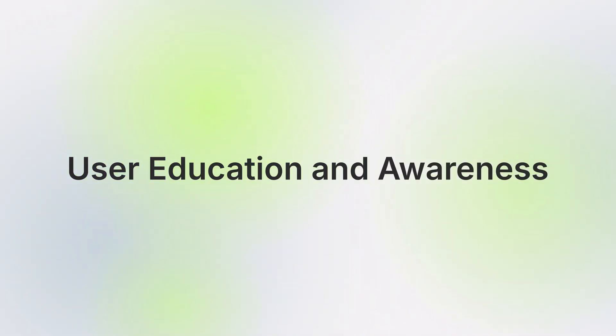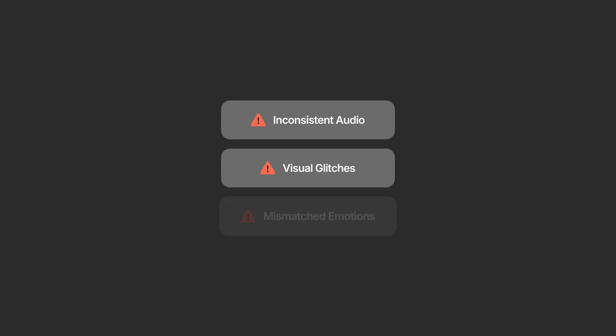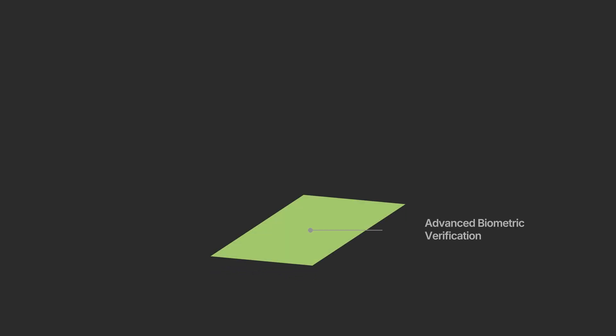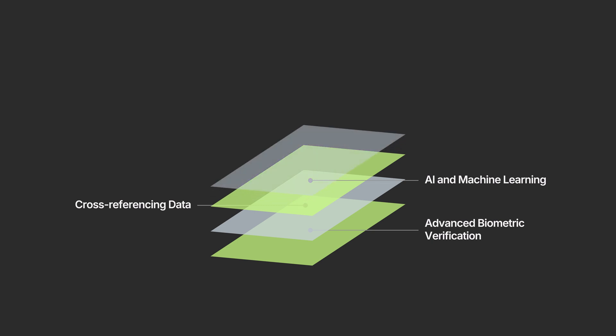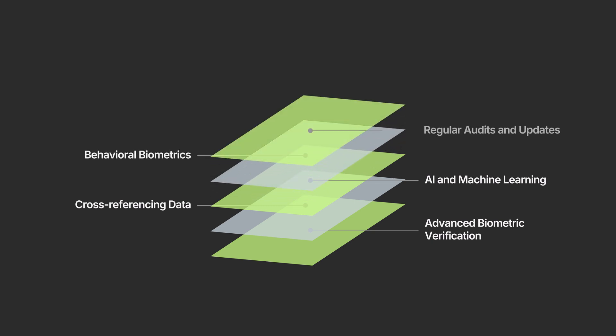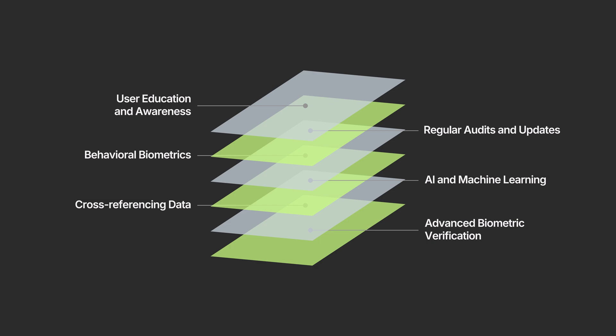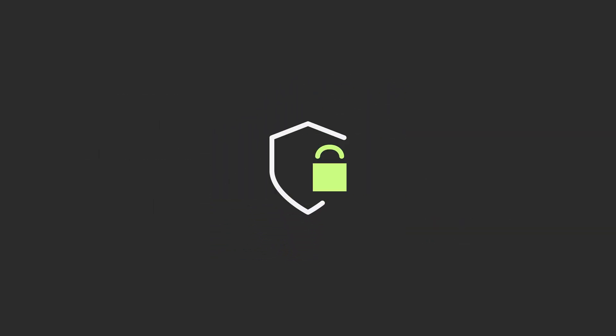Last but not least, we must remember user education and awareness. Educating users to recognize the signs of deepfakes — such as inconsistent audio, visual glitches, or mismatched emotions — empowers individuals to question suspicious content. Awareness campaigns help limit the spread of malicious deepfake media. Together, these measures create a multi-layered defense strategy that can significantly mitigate the risks associated with deepfakes in personal security, corporate environments, and public spaces.